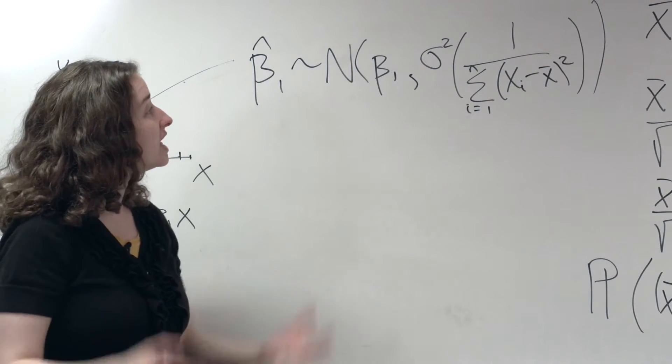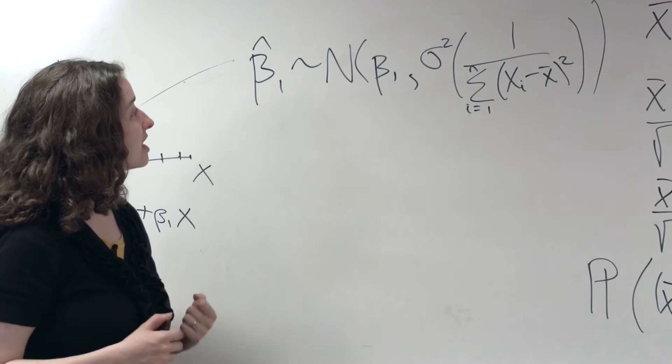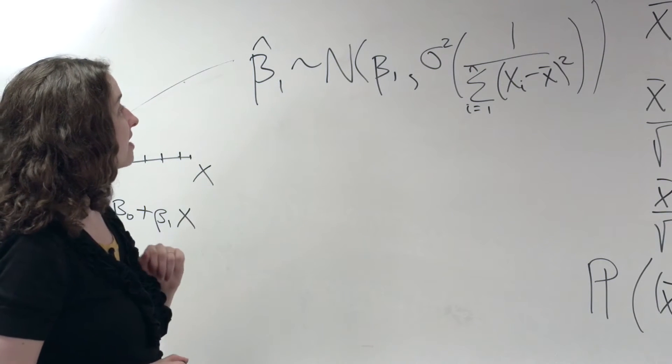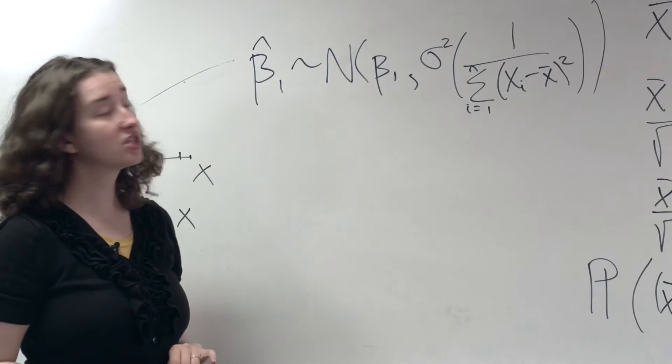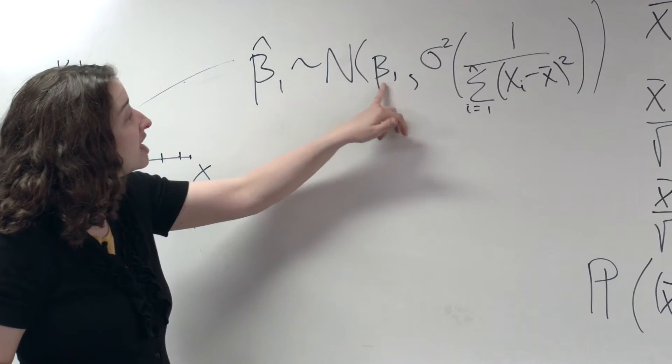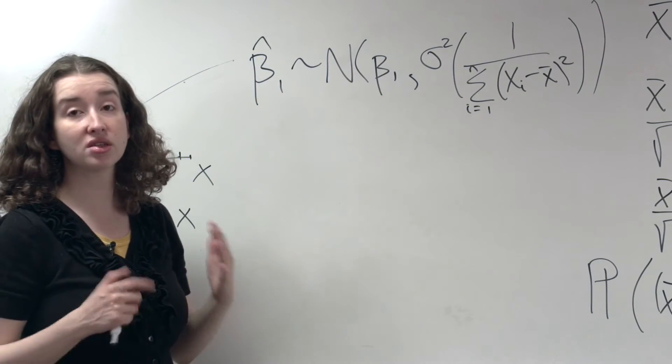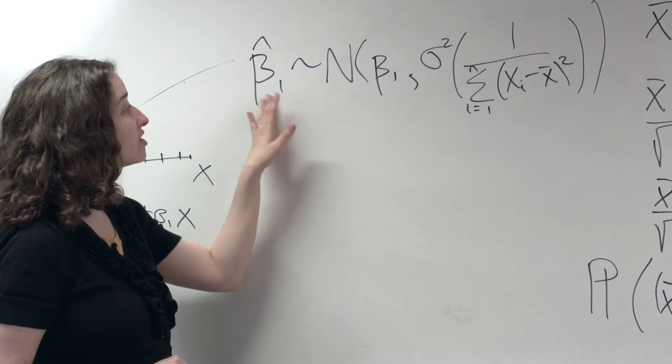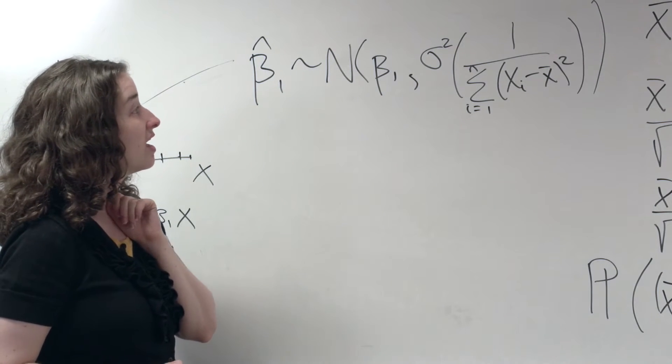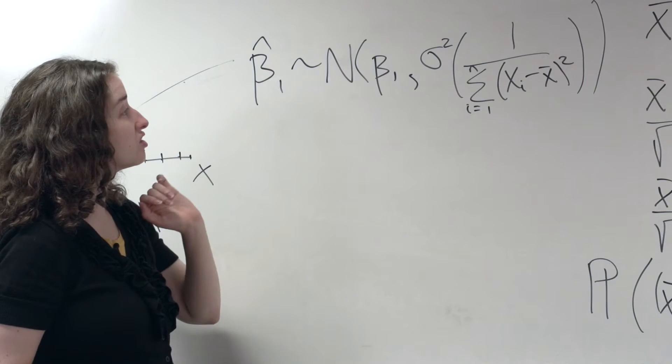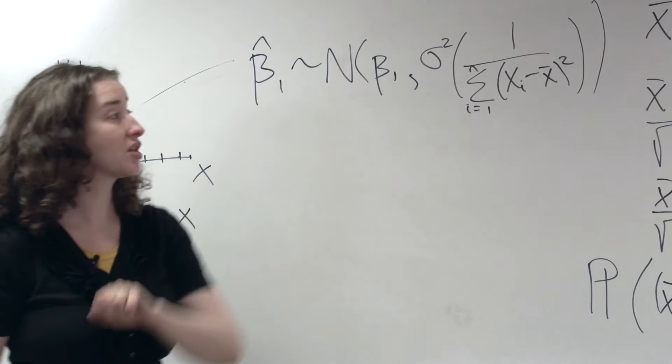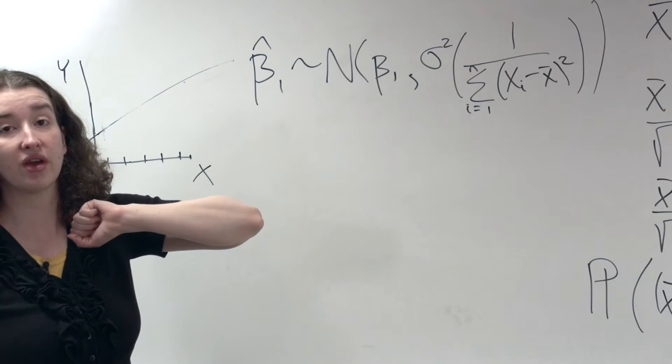This says that if we repeatedly sample from the population, sample wise from this line, and estimate slopes for each data set, the average, the mean of those slopes will be equal to the true slope that we chose by simulation. On average, our slope estimate is equal to the truth. And that set of slopes will follow a normal distribution that has some particular variance, and this is the expression for the variance.